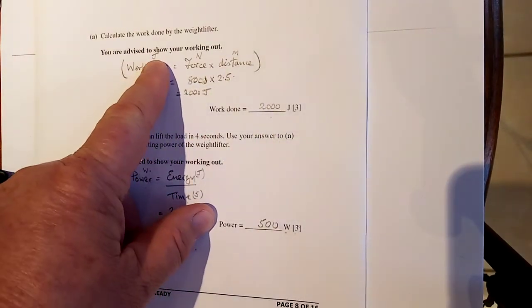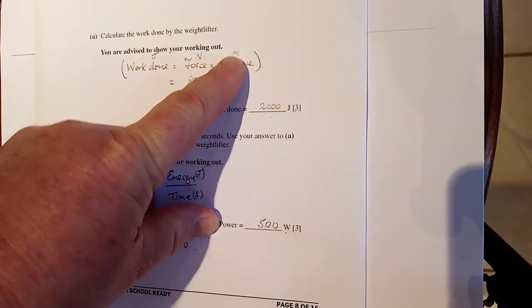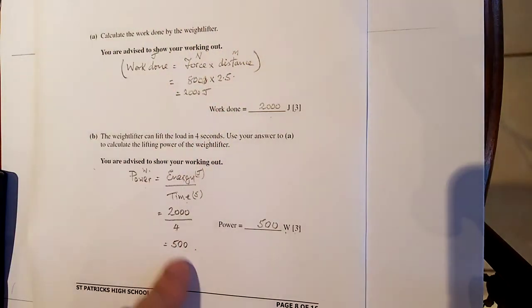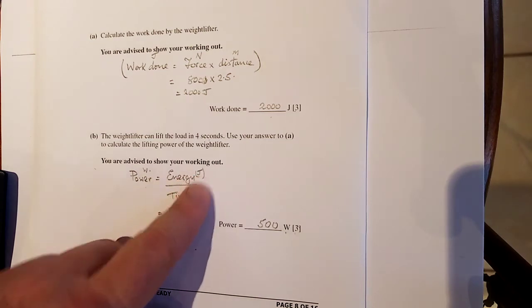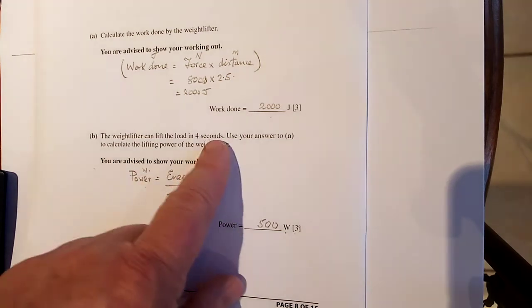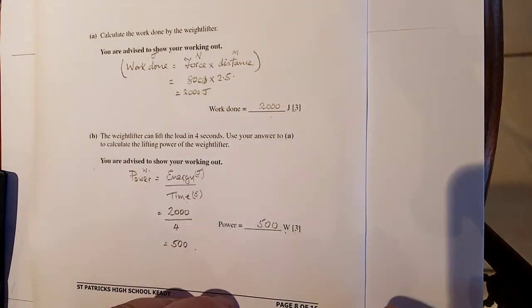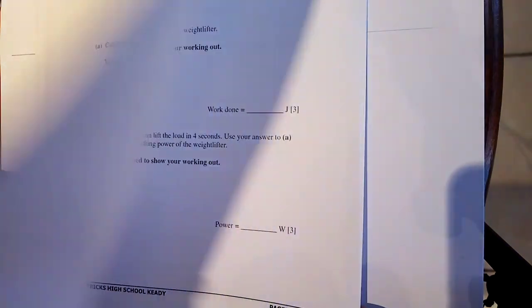Again two formulas to learn. Work done in joules, force in newtons, distance in meters and you should be checking this in the question. Power in watts, energy in joules, time in seconds and you check that. Remember the examiner is going to be slippy on that. Slippy examiner.